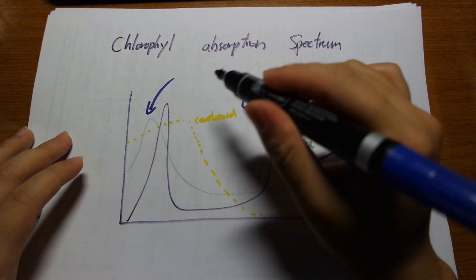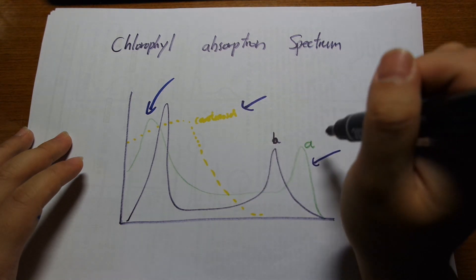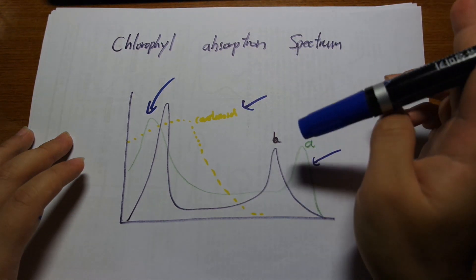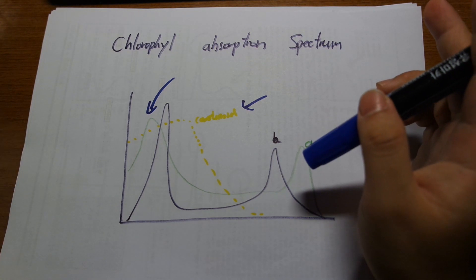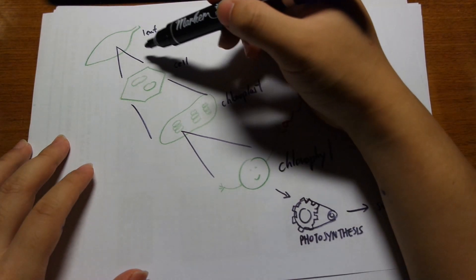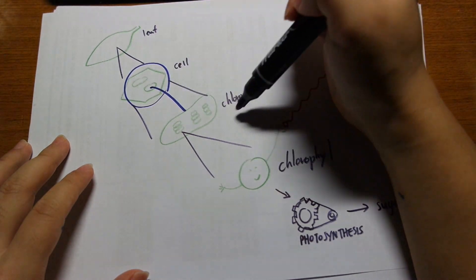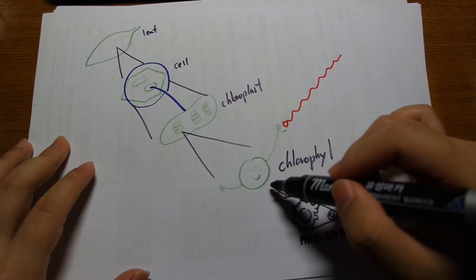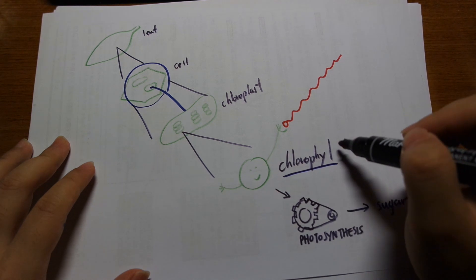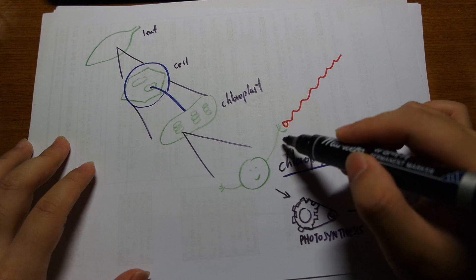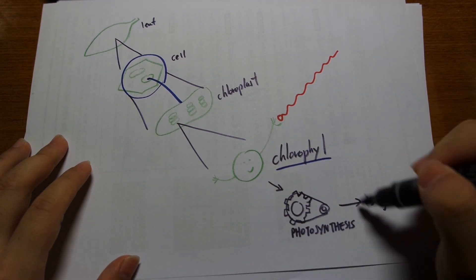So plants, based on the chlorophyll absorption spectrum, pick up mostly red and blue — they're not so good at picking up green and yellow. If you look at a leaf, it has cells; inside the cells are chloroplasts, which are the organelles that carry out photosynthesis. Inside the chloroplast are pigments called chlorophylls, which absorb the light, pick it up from the sun, feed it into the photosynthesis machinery, and that produces sugar.